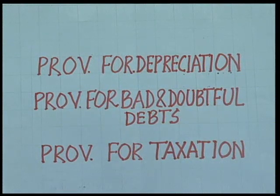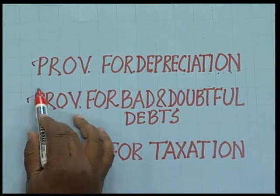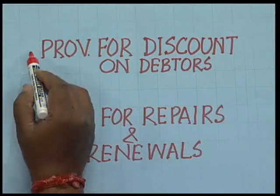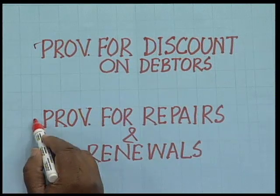Similarly, suppose you need to make some repairs on machinery in the future — you cannot exactly estimate the amount of expenses to be incurred, so we have to make a provision for that as well. Examples of provisions made in the current year include: provision for depreciation, provision for bad and doubtful debts, provision for taxation, provision for discount on debtors, and provision for repairs and renewals.